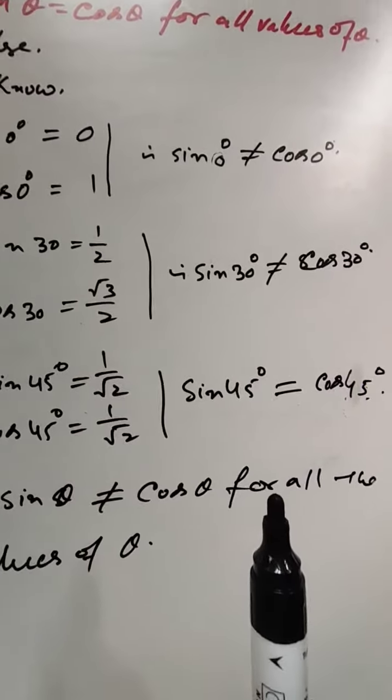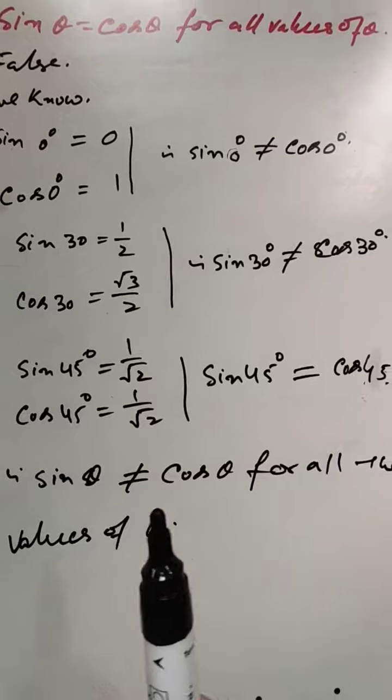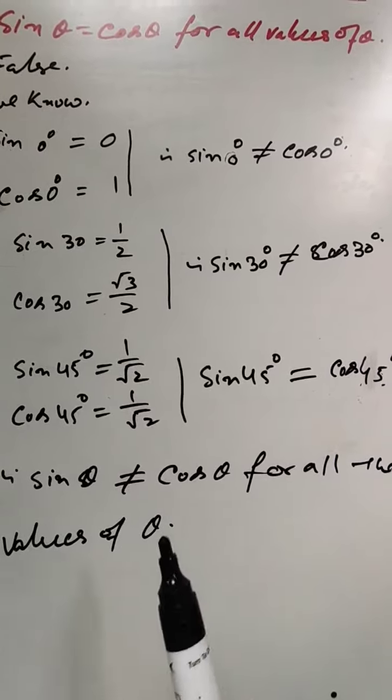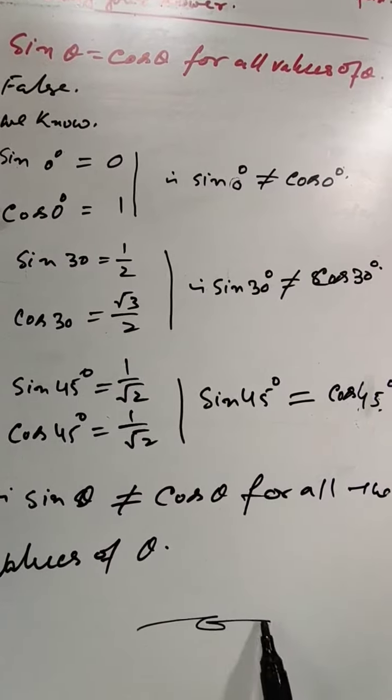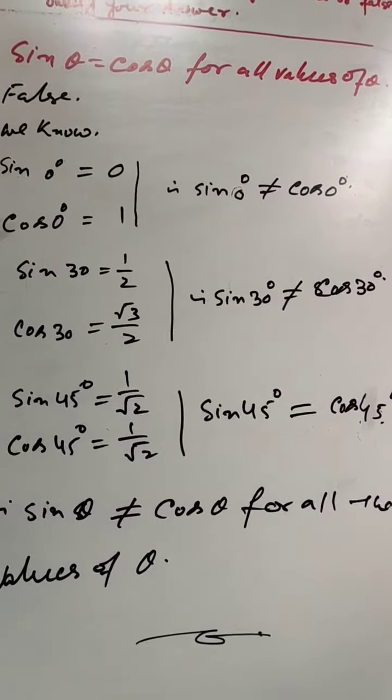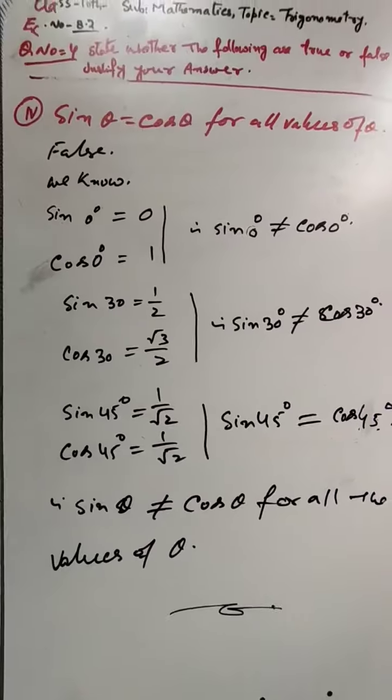Therefore, sine of θ is not equal to cos of θ for all values of θ. This statement is false. You might have understood — it is very easy. Thank you.